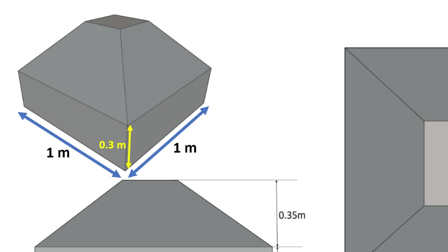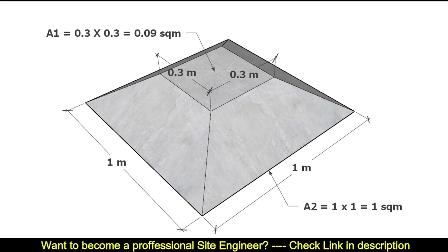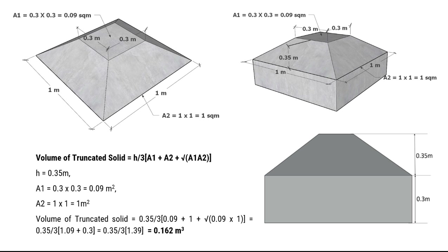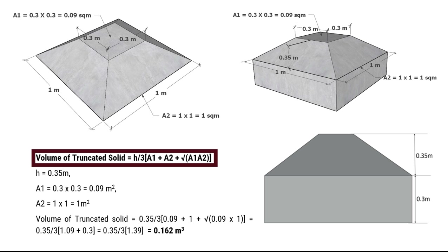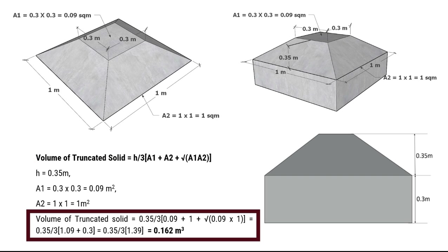Let's begin the calculation. To calculate the volume of the truncated pyramid, we use this formula: Volume equals height upon 3, multiplied by A1 plus A2 plus the square root of A1 times A2. After substituting the values, we get the volume of the truncated solid equals 0.162 cubic meters.